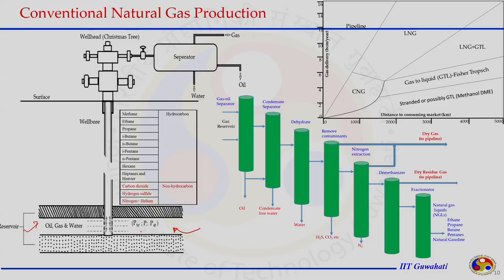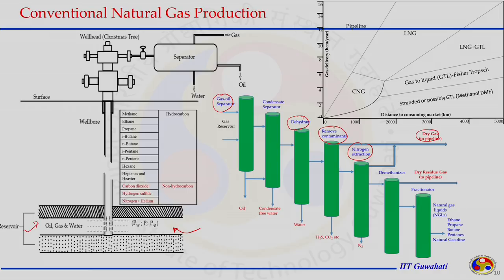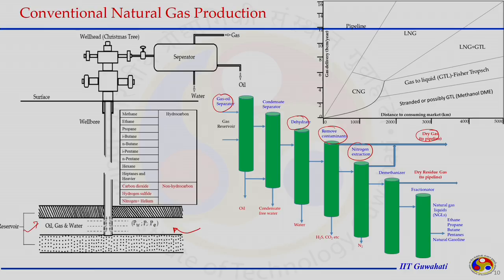As the gas travels from the porous reservoir to the surface, it goes through a separator where oil, gas, and water are separated. After the separator, it goes to dehydration where water is removed, then to contamination removal — especially H2S, CO2 — and then nitrogen extraction. Because of composition changes and temperature and pressure condition changes, the properties of natural gas change at each stage.